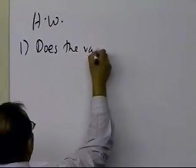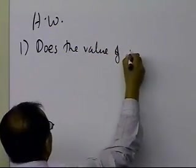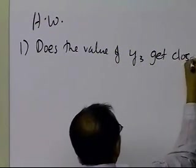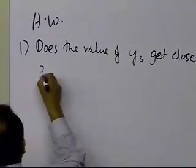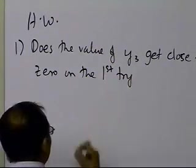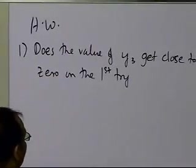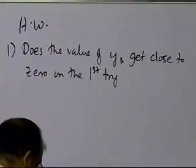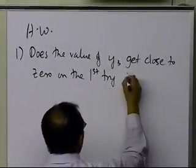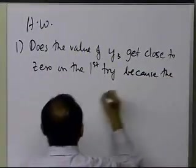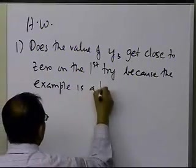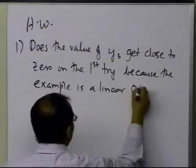Does the value of y3 get close to 0 on the first try? On the first try of using the linear interpolant, does the value of y3 get close to 0 on the first try? Because the example is a linear ordinary differential equation.